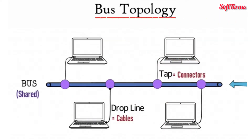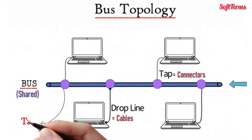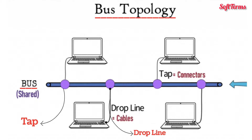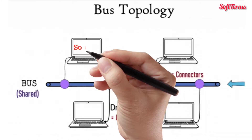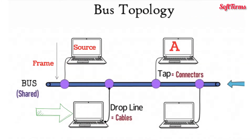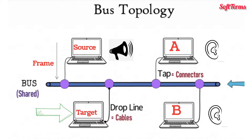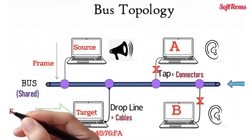Starting with bus topology. In a bus topology, computers connect to a shared central cable called a bus, with tap and drop lines. Shared means all connected computers use the same cables for data frame transmissions. Tap or connectors and drop lines are cables running between computers and the bus. If a computer sends a data frame to a second computer, all other computers connected to the same central cable also receive the frame — other computers can hear what the first computer is saying. However, the target computer only accepts it; other computers reject the frame by checking the destination MAC address in the received frame.